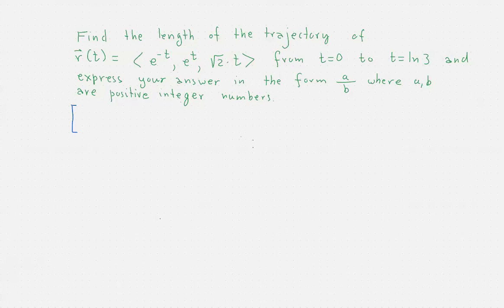We would like to find the length of the trajectory of the vector-valued function e^(-t), e^t, √2·t for time t=0 to time t=ln(3).